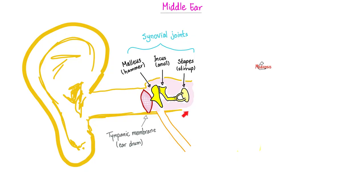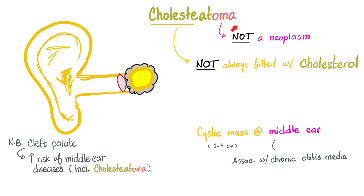To summarize: cholesteatoma is a disease in the middle ear. It is not a neoplasm even though it ends in 'oma,' and it is not necessarily made of cholesterol — sometimes there is cholesterol debris, sometimes not. What is true is that cholesteatoma is a cystic mass in the middle ear measuring 1 to 4 centimeters in diameter, associated with chronic otitis media or repeated attacks of acute otitis media.